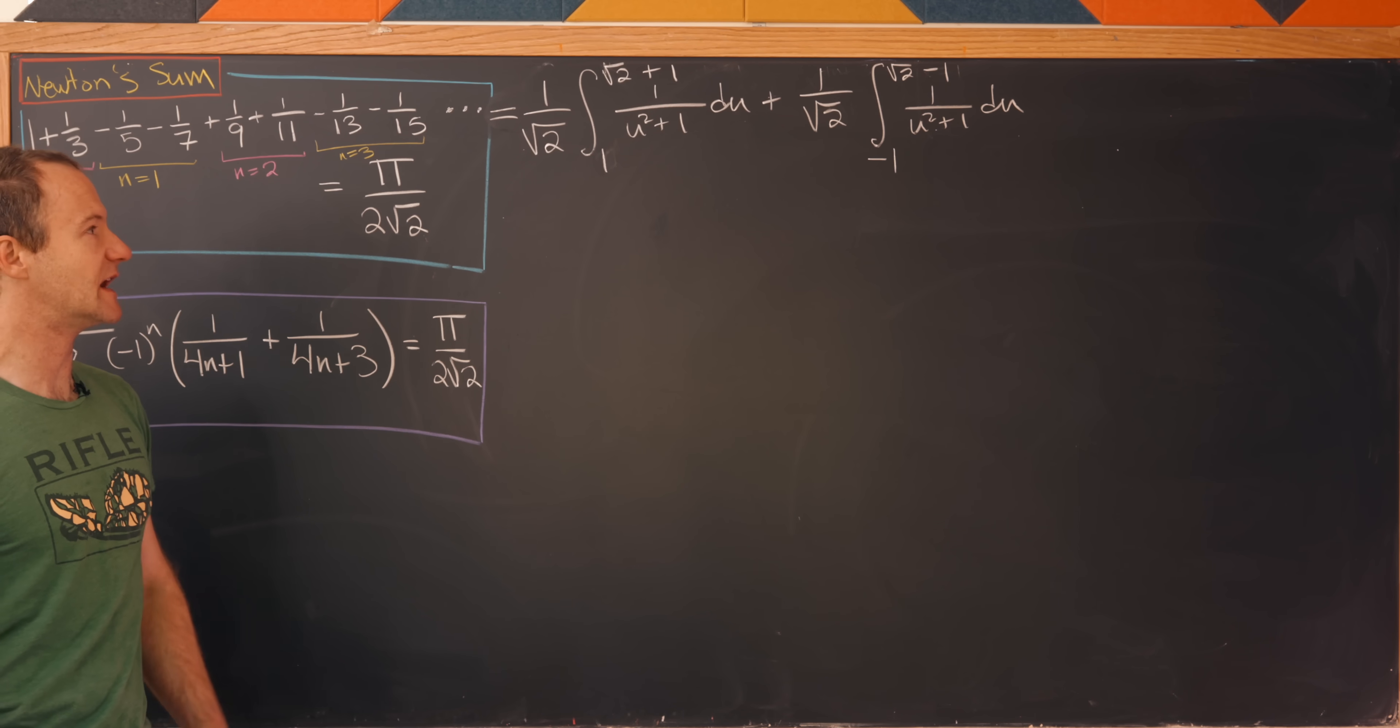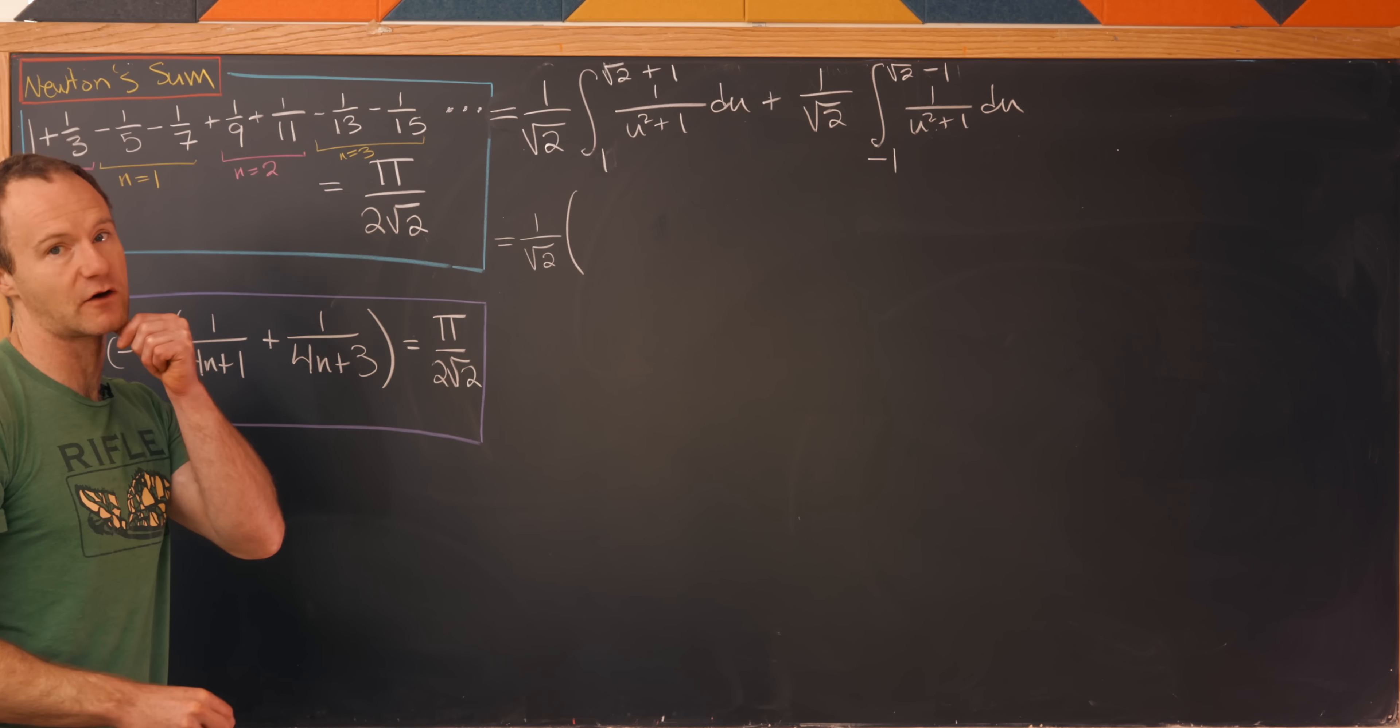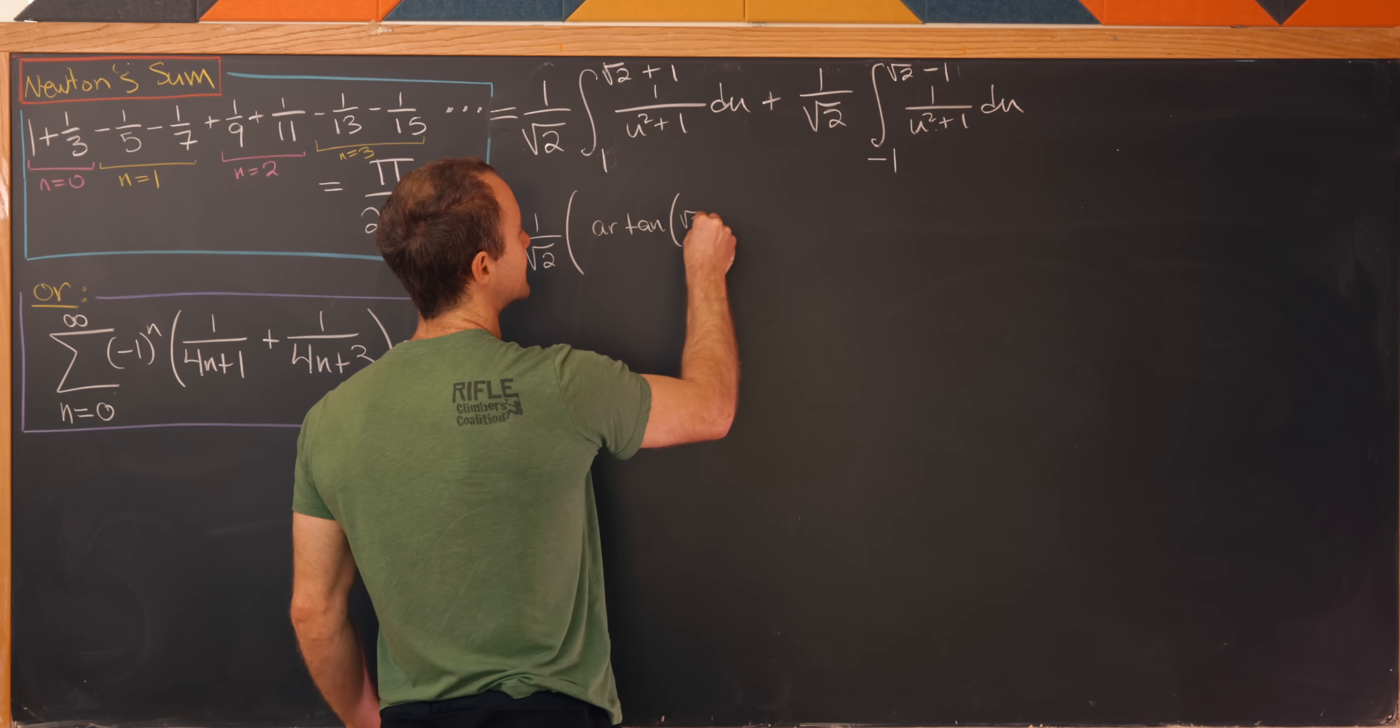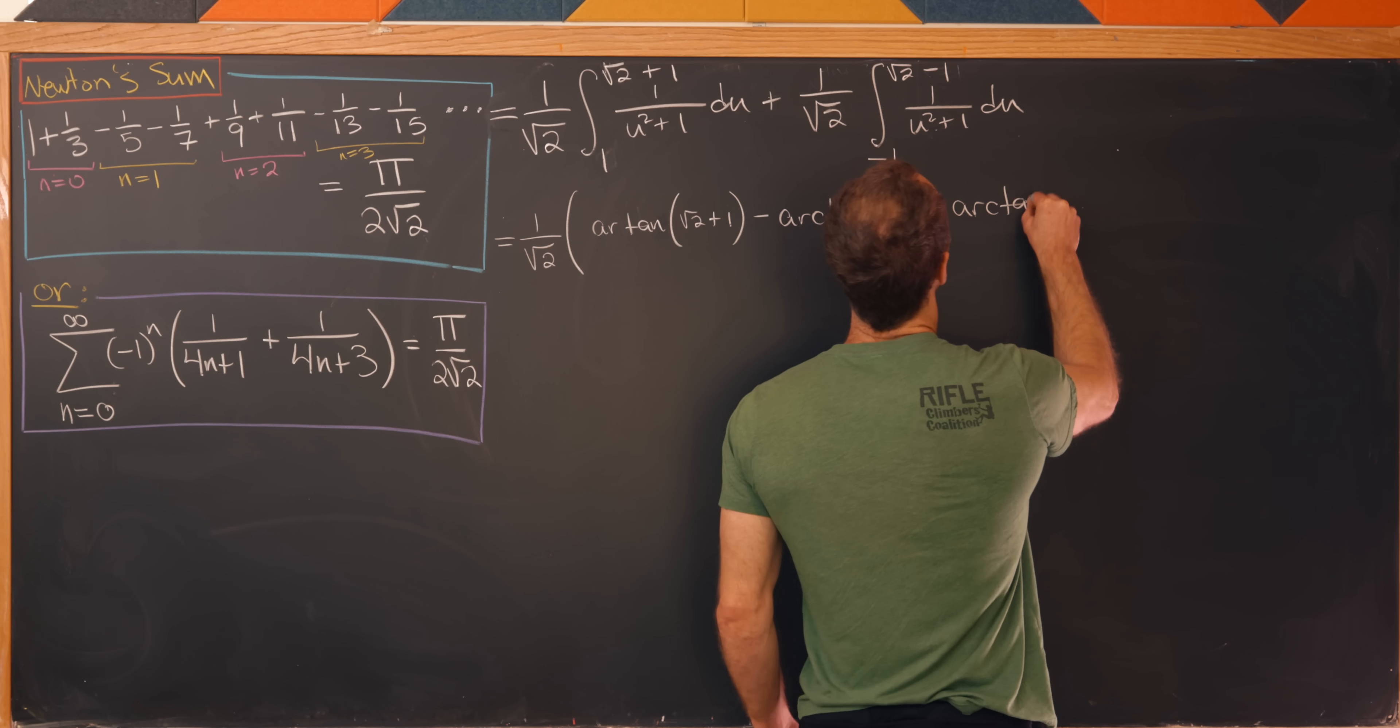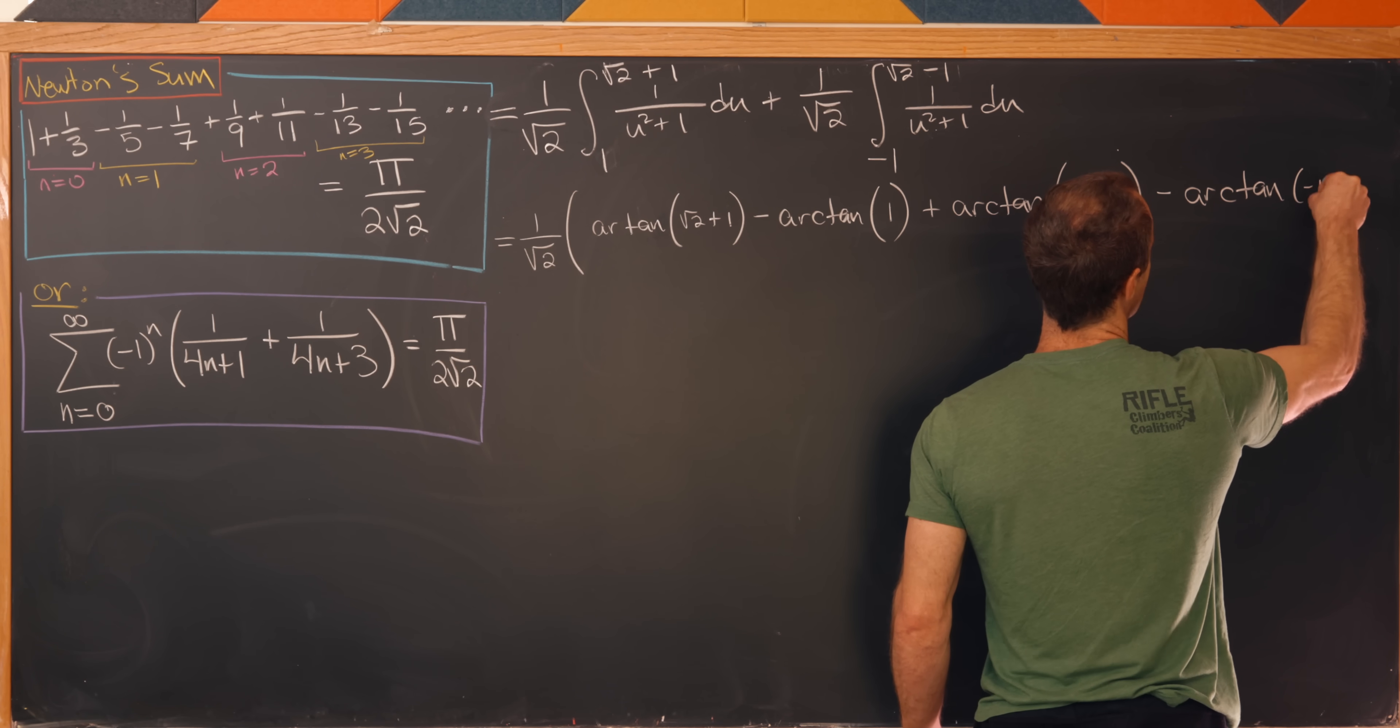So let's bring that information up and finish this thing off. This is where we've ended our calculation. Now we're ready to just use the fundamental theorem of calculus. We'll take the antiderivative and plug in the endpoints. Notice we've got a factor of 1/√2 out front. And then for this integral we'll have the arctan of (√2 + 1) minus the arctan of 1. And then for the second one we'll have the arctan of (√2 - 1) and then minus the arctan of -1.